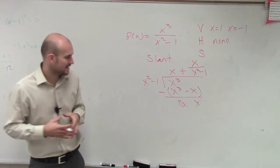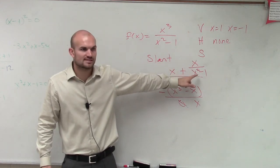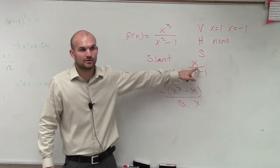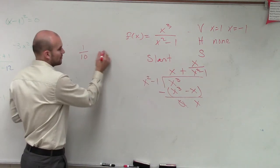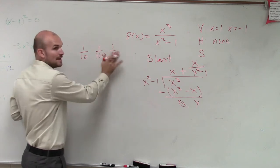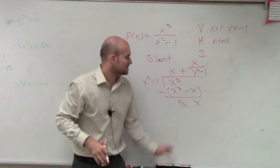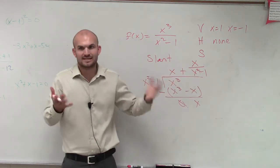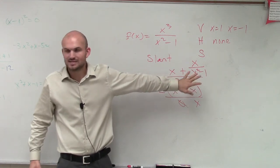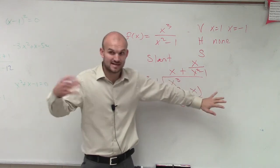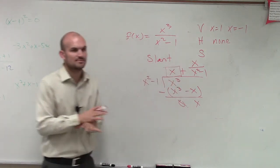Now, I don't want to get too deep into this because it's more calculus. But what you need to understand is that as x gets larger, the remainder term approaches 0, because the denominator — which is squared — gets bigger and bigger. You end up with something like 1 over 100, approaching 0. So the remainder doesn't affect our slant asymptote. We don't involve ourselves with the remainder.